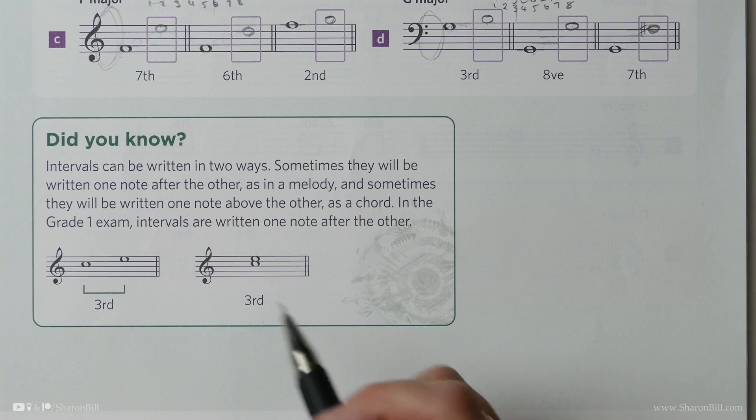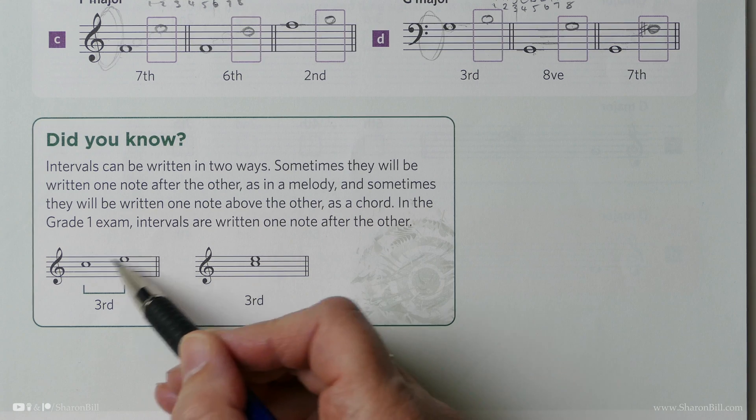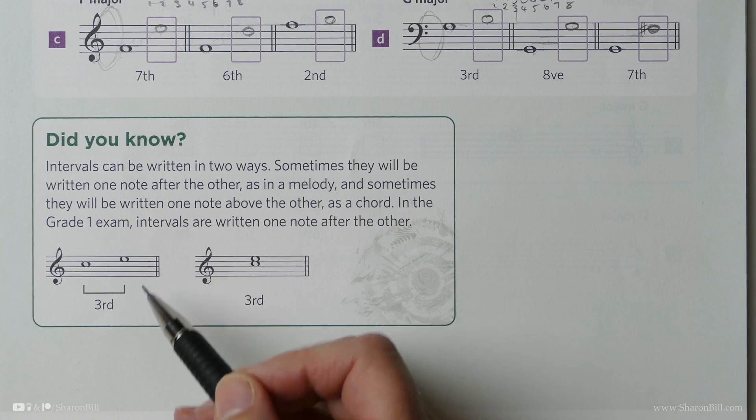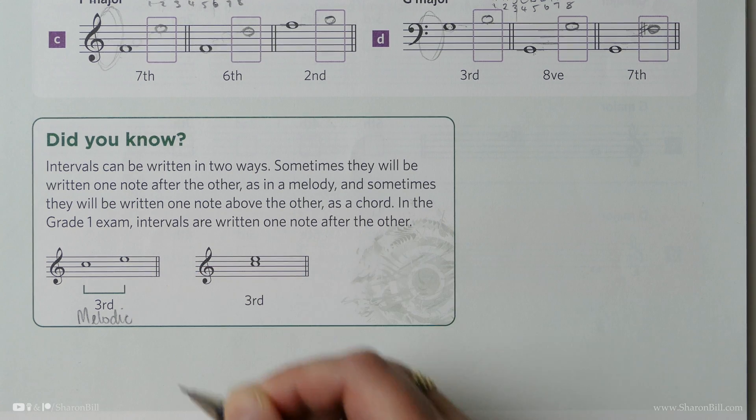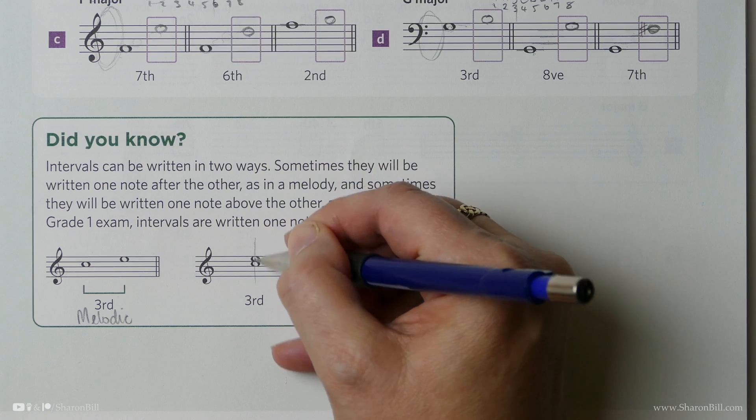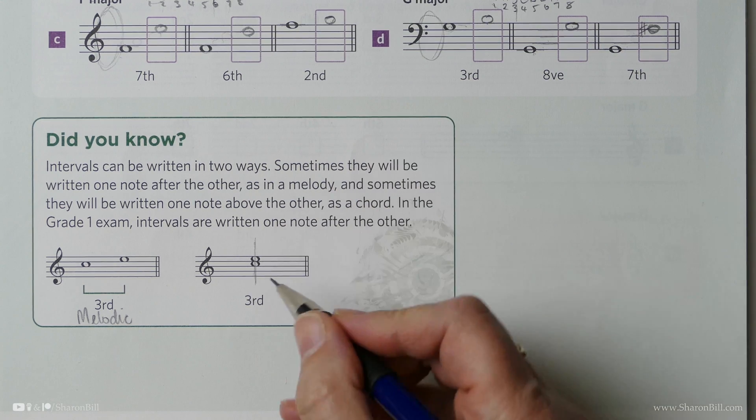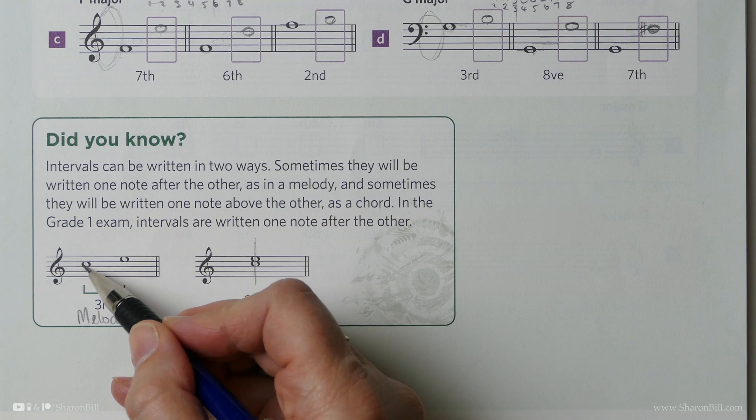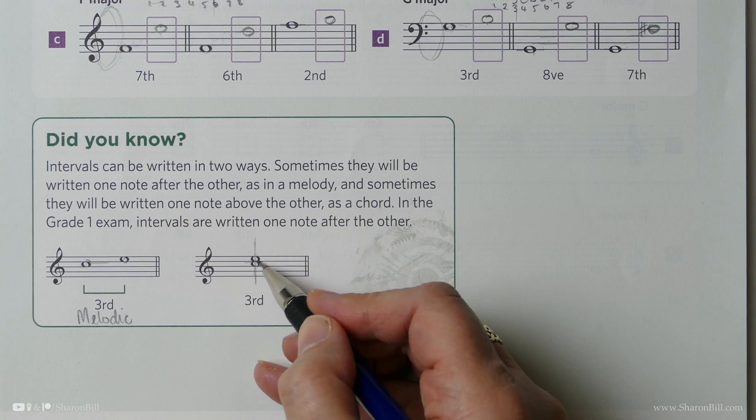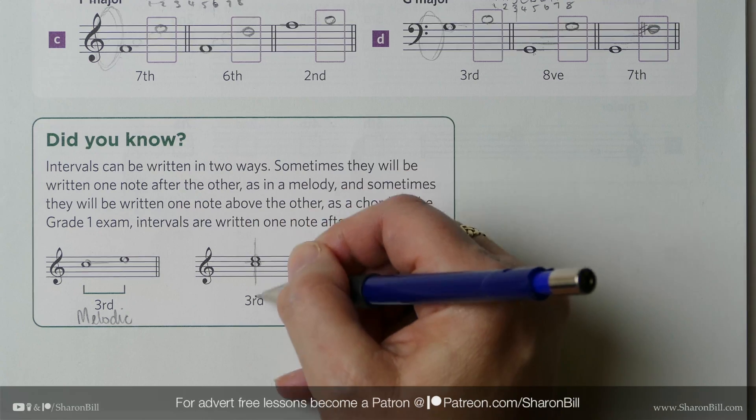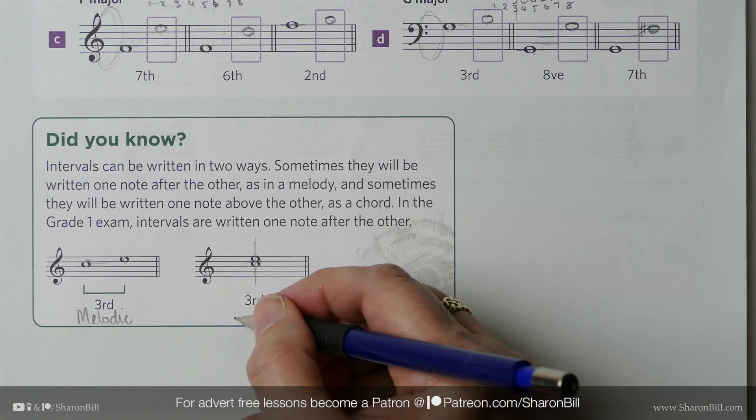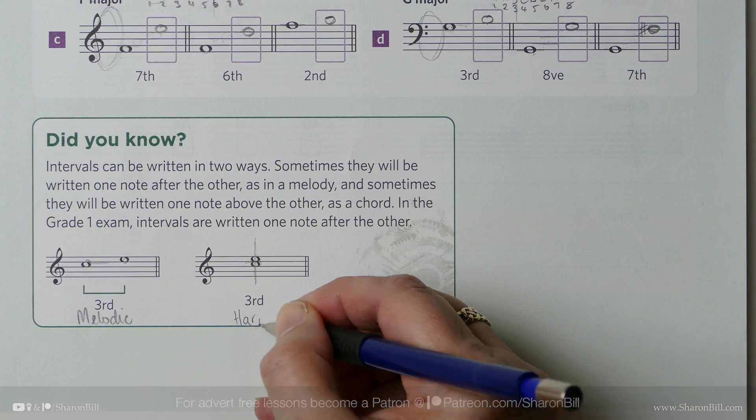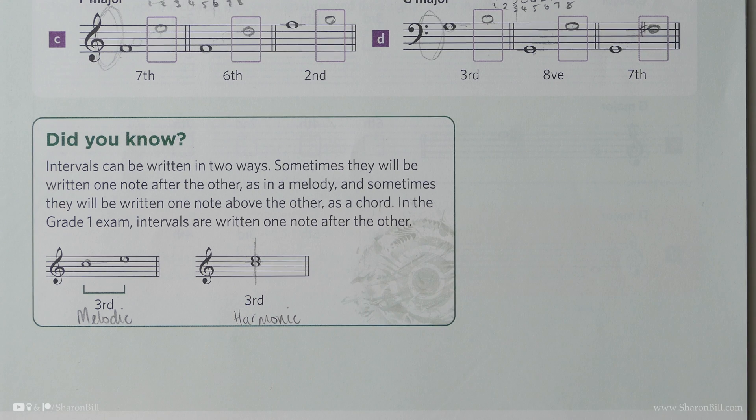And then just looking at this little information box at the bottom of the page, we can see that the intervals could be written in two different ways. They can come one after each other, which we've already discussed is called a melodic interval. Or they can come together as a chord, where you play them. They both sound at the same time. The distance is the same. It's still a one, two, three, one, two, three. But this time, it's sounding together rather than separately. And because these are sounding together like a harmony, we would call this a harmonic interval. But the principle remains the same. Either way, it's just a third.